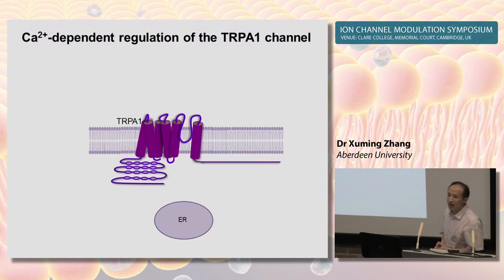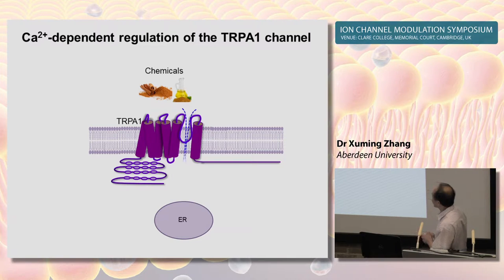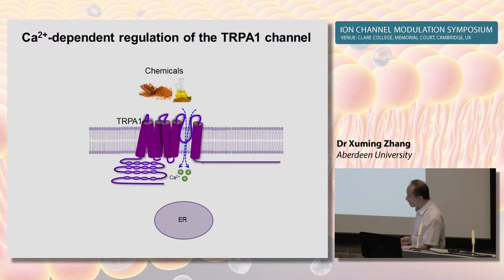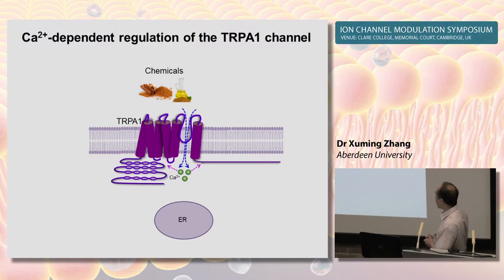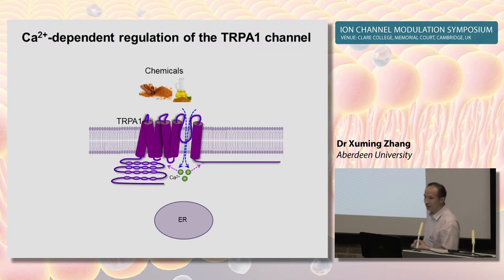A rather very important mechanism underlying the diversified function of the channel is calcium. TRPA1 is, of course, a calcium-permeable ion channel. Activation of TRPA1, for example by chemical agonists, can cause increased intracellular calcium. Interestingly, calcium can then feed back to auto-regulate the channel, with low calcium promoting activation and high calcium promoting inactivation of the channel.